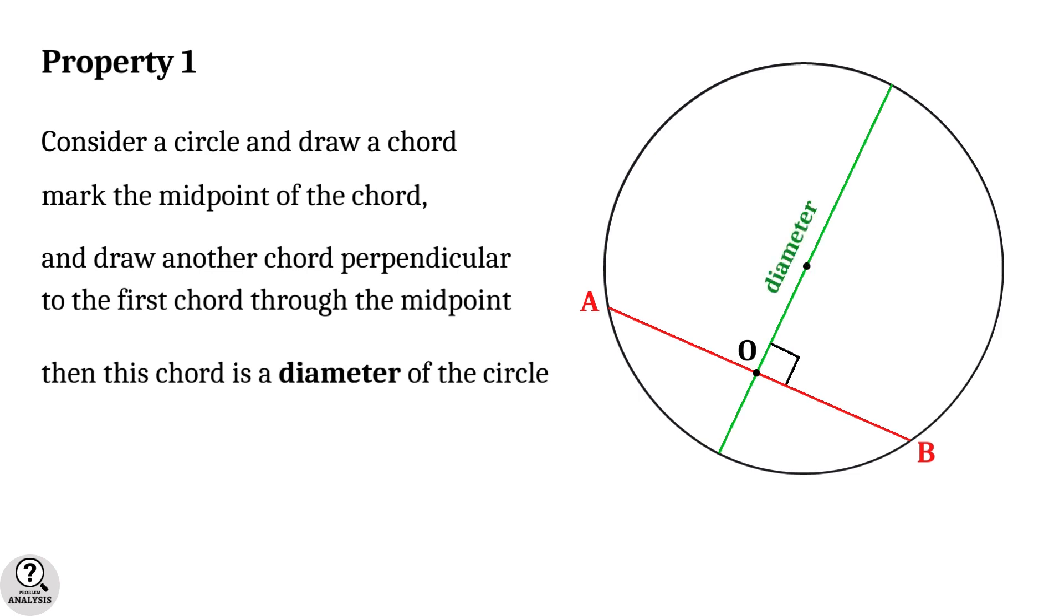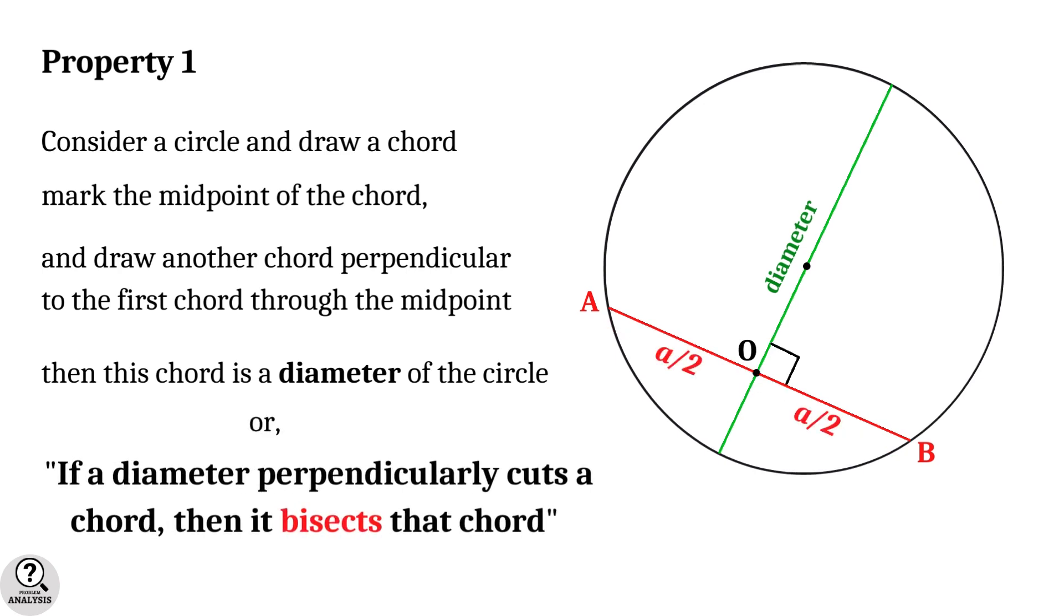Or in another way, if a diameter perpendicularly cuts a chord, then it bisects that chord. Property number two.